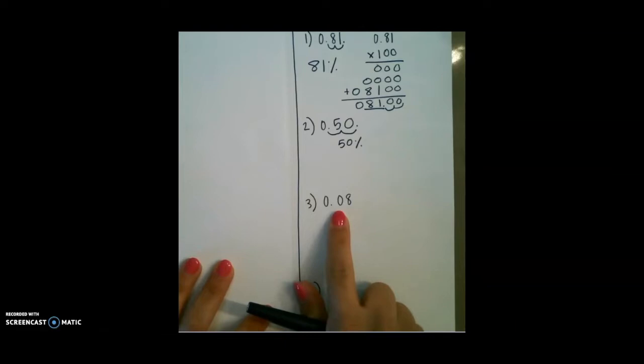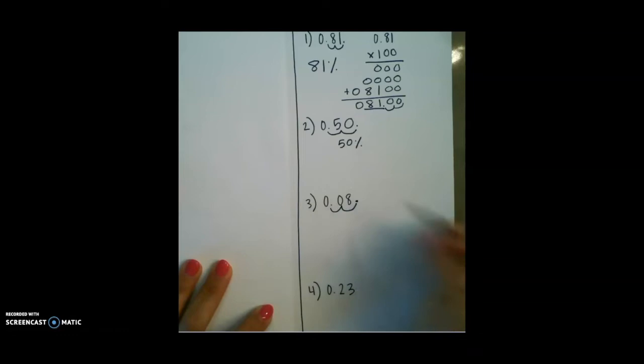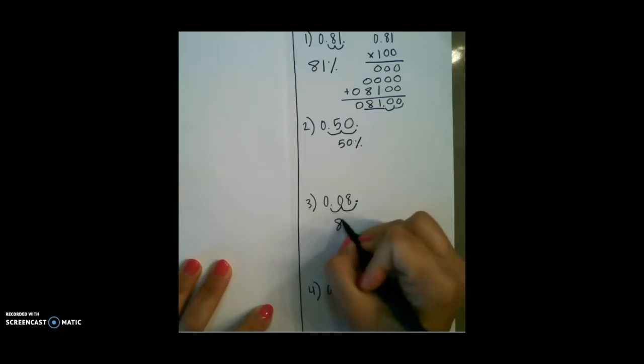For our next example, we have 0.08. Again, move our decimal two places to the right, and add a percent sign.